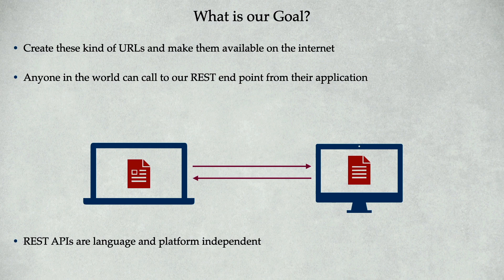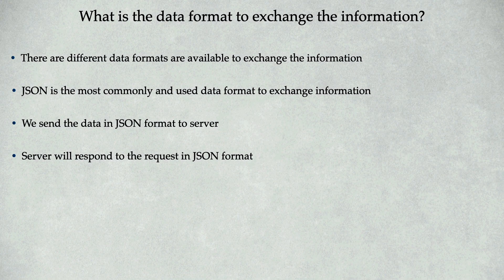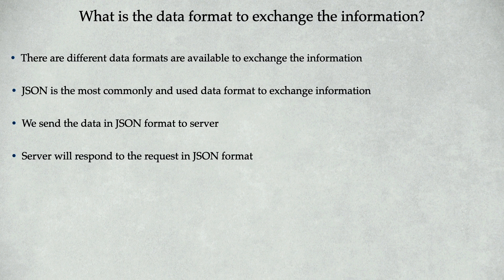This leads us to a very important question: what is the data format to exchange information? If two applications are built on two different languages, how are they going to communicate and exchange information? There are different data formats available — XML-based, JSON, and text-based. Out of these, JSON is the most commonly and widely used data format to exchange information over the network. We send data in JSON format to the server, and the server responds in JSON format.